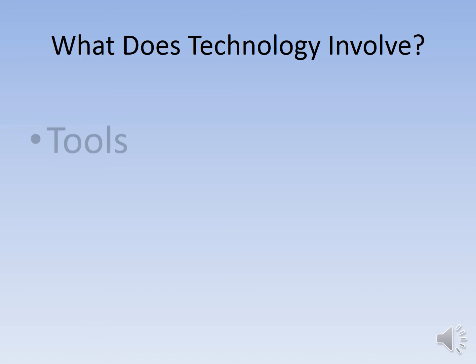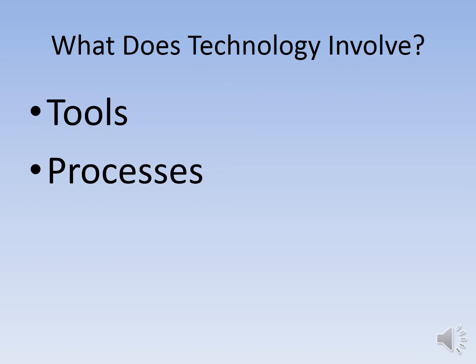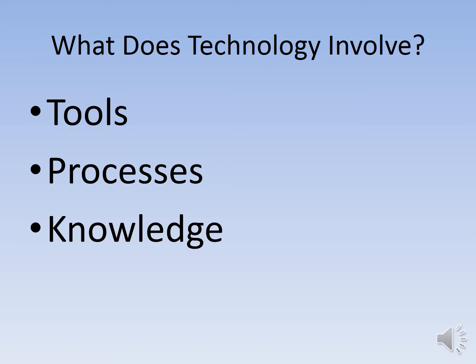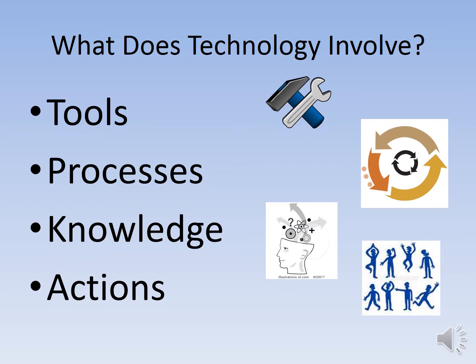Technology involves four things. The first is tools — something that we use to do something else, such as a hammer, screwdriver, nails, a branch, or a wire. The second is processes — the steps that we take to complete an action. Third, knowledge is our understanding and thoughts about how to do something. And fourth, actions are those things that we do. So: tools is what we use, processes are the steps we take, knowledge is what we know, and actions are what we do. Please make sure you write those down in your workbook.